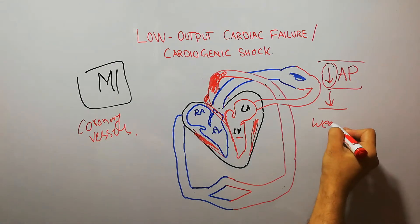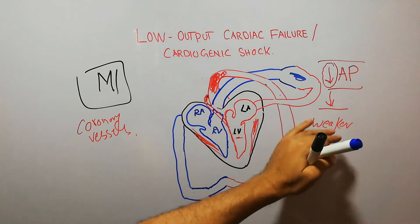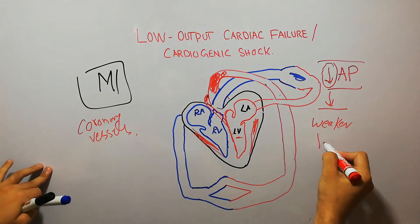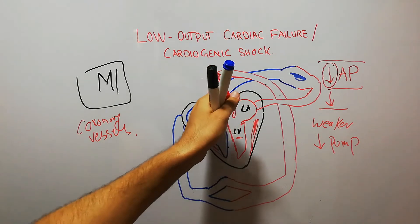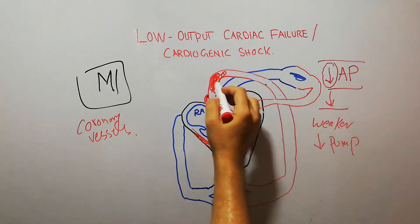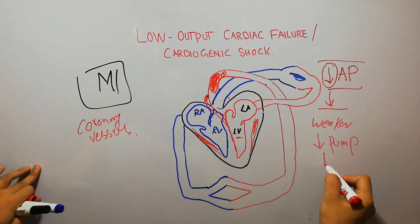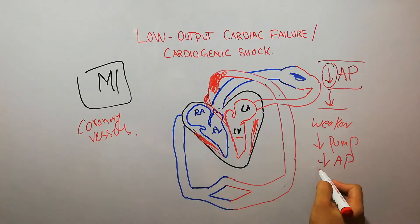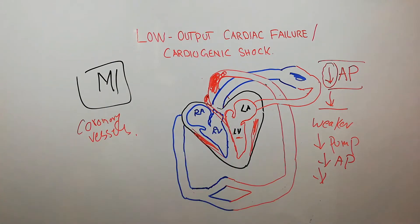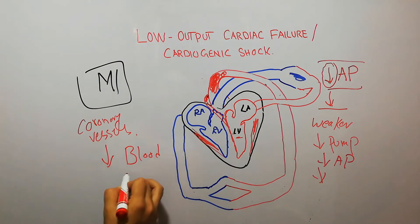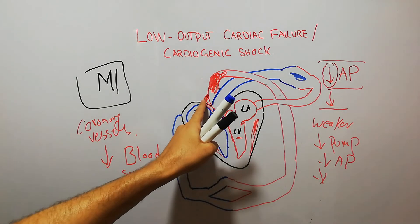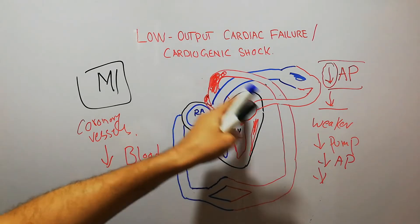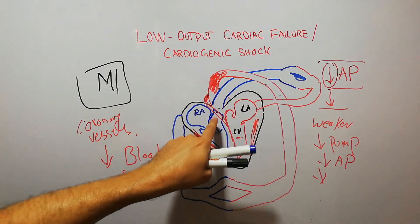Decreased coronary pressure leads to a still weaker heart. When the heart becomes weaker it cannot pump even the initial amount of blood, so pumping decreases more and more. As pumping decreases, aortic pressure falls again, coronary vessel pressure falls further, blood supply to the heart decreases further, causing more damage, and arterial pressure falls yet again — decrease in aortic pressure leads to decrease in coronary pressure, leading to decreased heart muscle supply, leading to decreased pumping, leading to further arterial pressure drop.